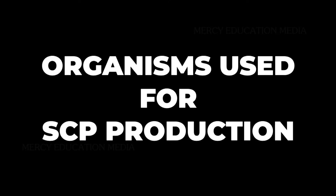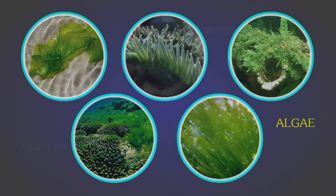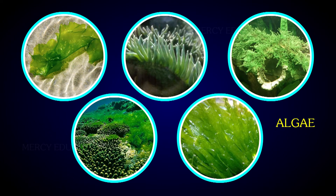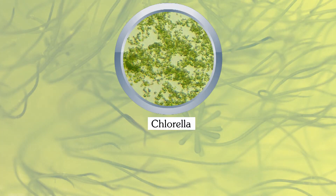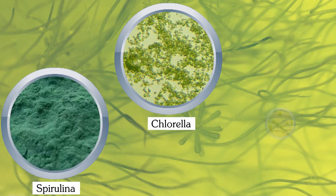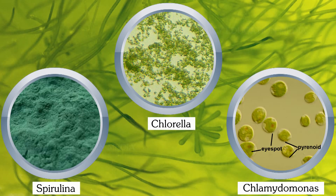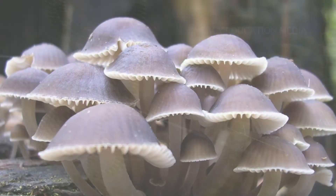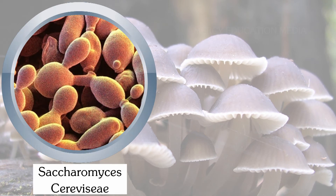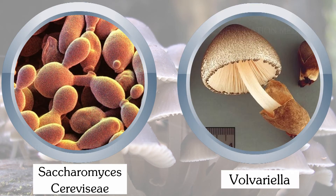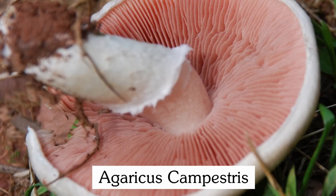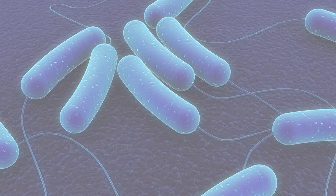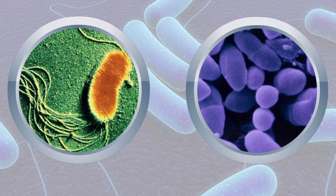What are the organisms used for SCP production? Algae consists of Chlorella, Spirulina, and Chlamydomonas. The fungi consists of Saccharomyces cerevisiae, Volvariella, and Agaricus campestris. The bacteria consists of Pseudomonas and Alcaligenes.